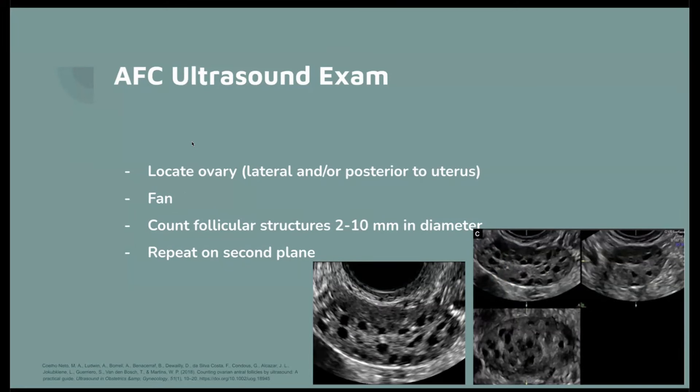You will find the ovary and fan through it, trying to find your best view — either longitudinal or coronal — where the ovary takes up at least 50% of the screen. As you fan through the ovary, count each follicular structure that is 2 to 10 millimeters in diameter. Antral follicles can be less than 2mm, but it's hard to differentiate those from other structures, so for consistency it's best to use the 2–10mm cutoff to ensure you're not counting something smaller.